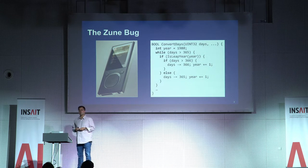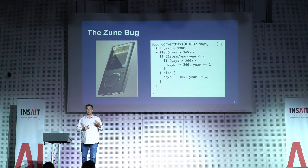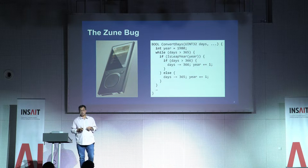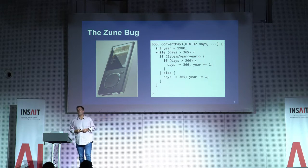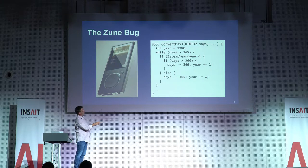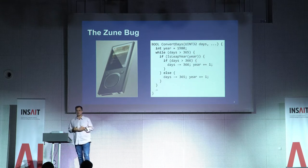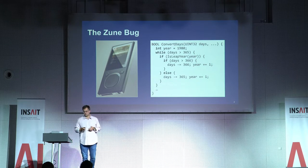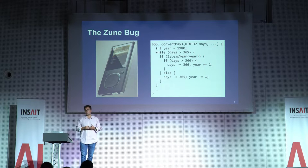Here's the piece of code that caused the problem. The Zune stores today's state as a number counting days since January 1st 1980, and has a C function that takes a number of days and converts it into today's date. It repeatedly subtracts 365 from days and increments the variable year by one, looping until fewer than 365 days remain. Of course, leap years must also be taken into account, which is why the code looks more complicated.